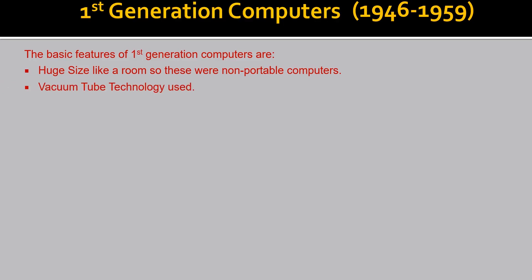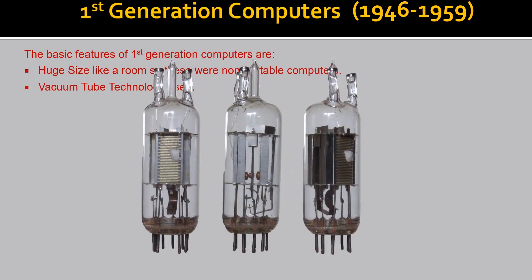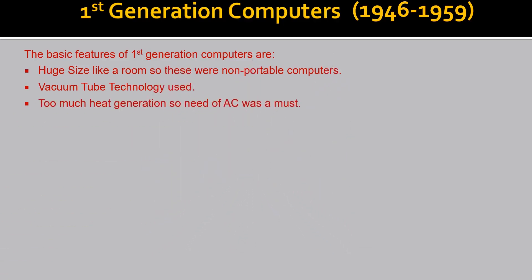1st generation computers used vacuum tube technology. As you can see in the picture, they are a type of filament glass bulb, also made up of glass, with filaments inside. These computers produced a lot of heat, and because of that heat, it was necessary to have an air conditioner.